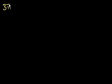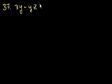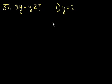Now on problem 37. They say, what is the value of xy minus yz? Statement 1 says y is equal to 2. Well, that by itself doesn't help us. That just tells us 2x minus 2z. So if you don't know what x and z are, you can't figure out what this whole thing is if you just know y is equal to 2.